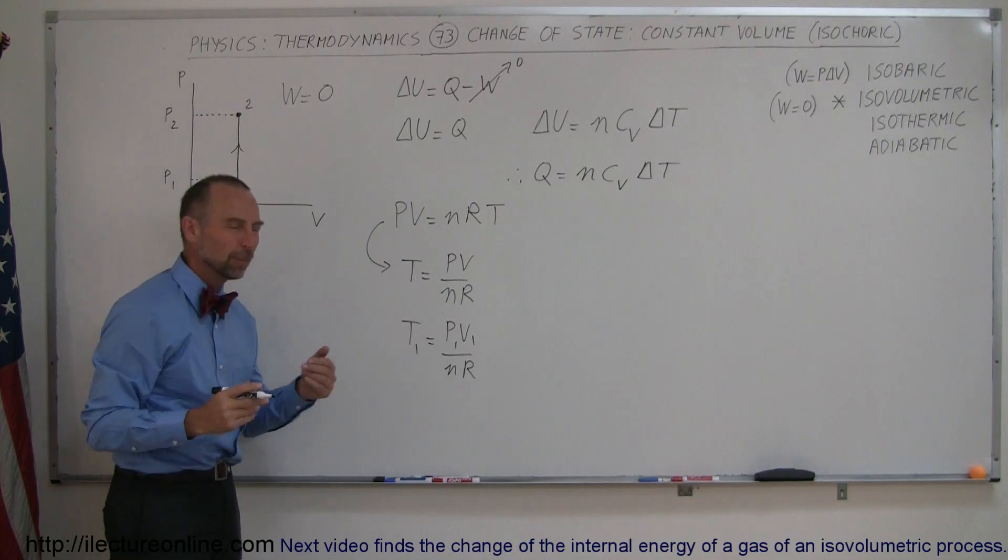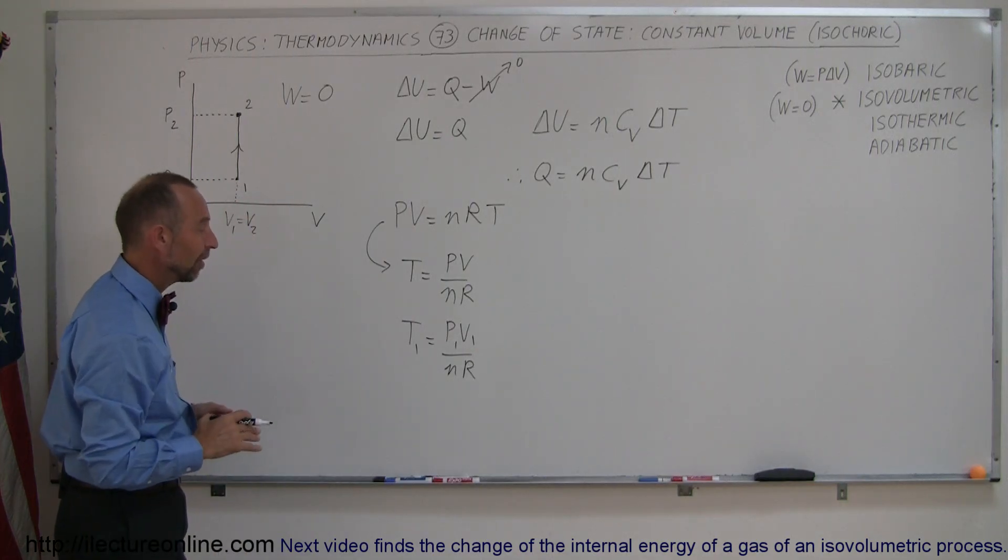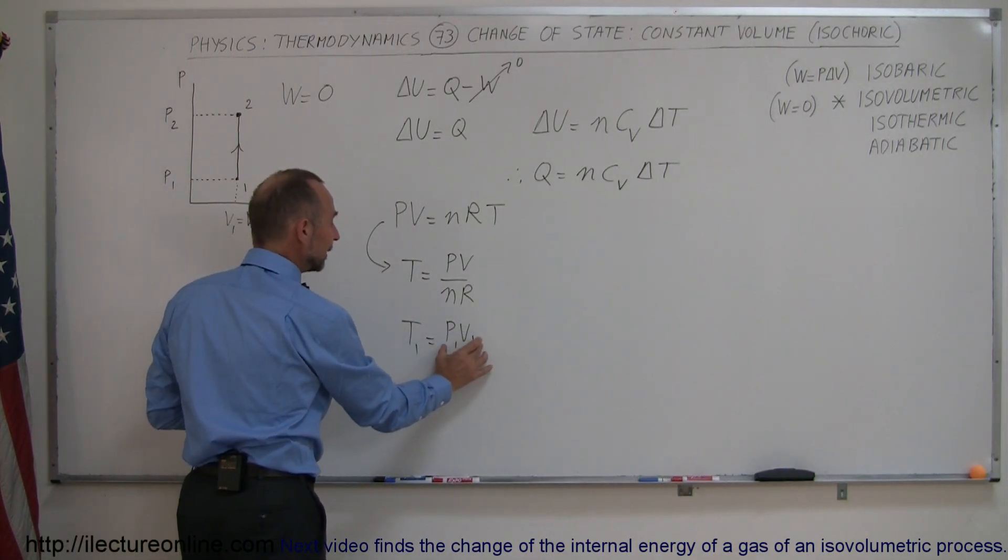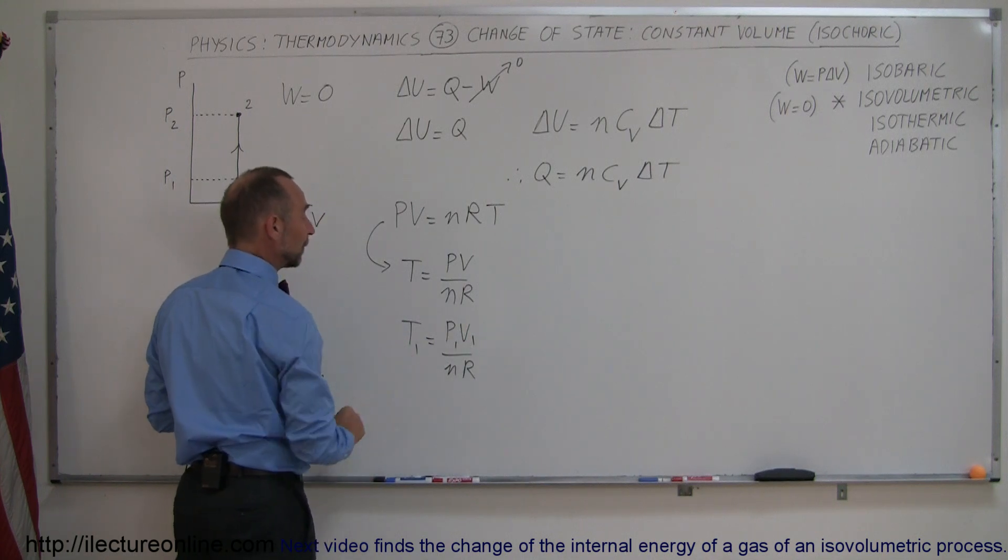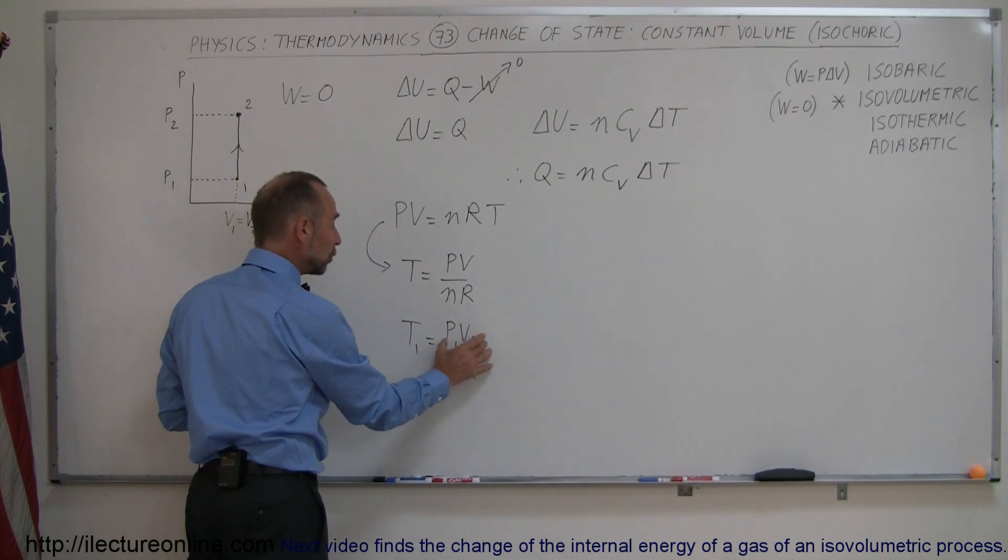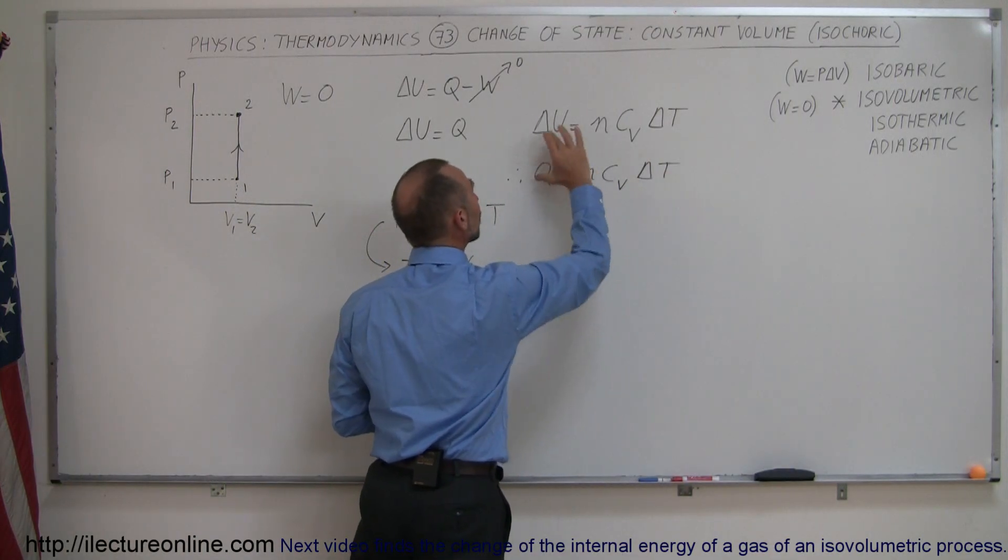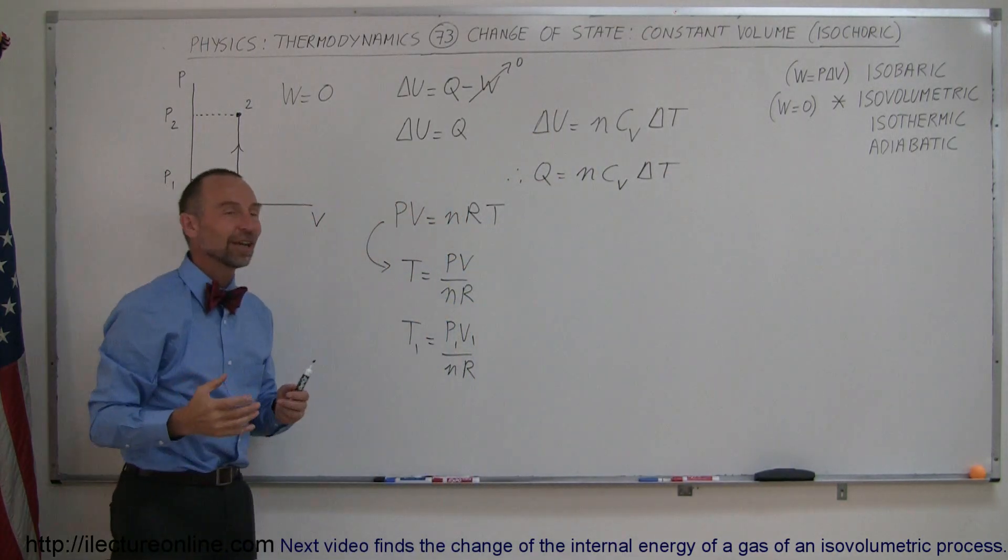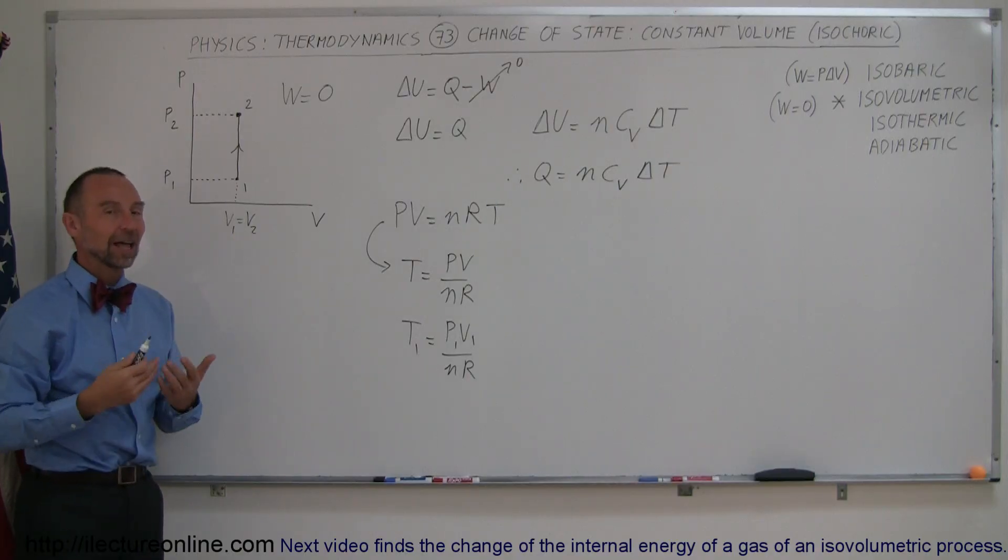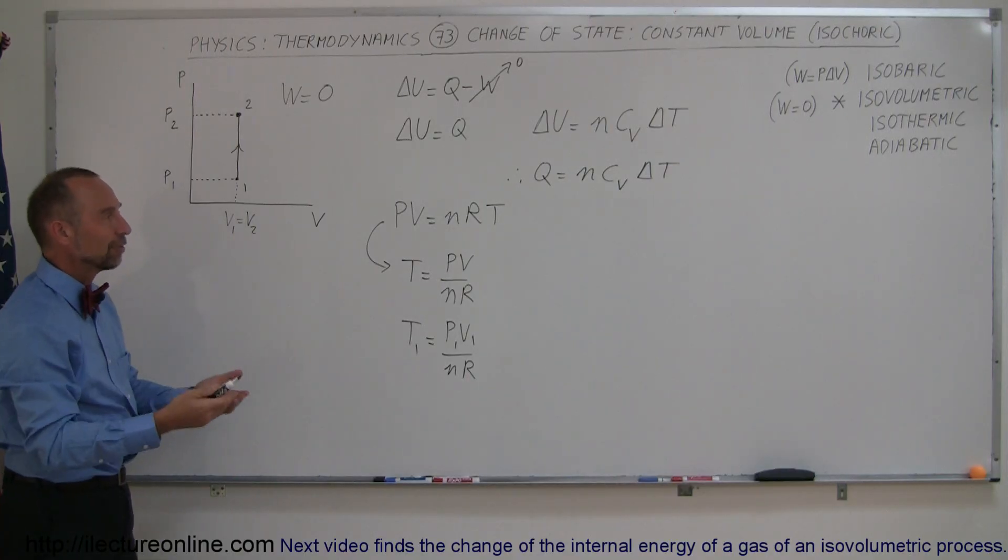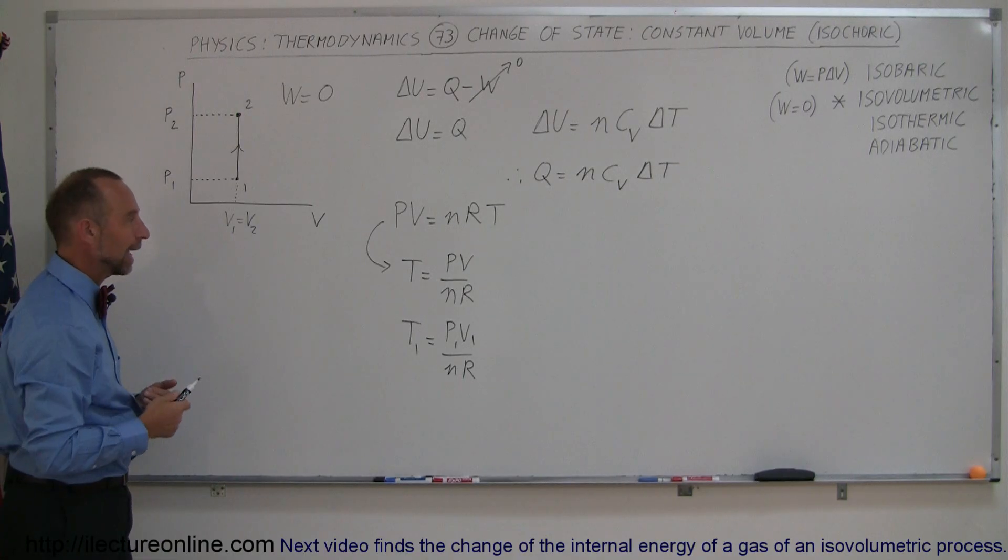And of course, you need to know how many moles there are in your sample of gas. But if the initial pressure and volume are known, you can figure out the initial temperature. If the final pressure and volume are known, you can find the final temperature, which then gives you the change in the temperature, which then allows you to find the change in the internal energy of the gas and the heat given off by the gas or added to the gas.